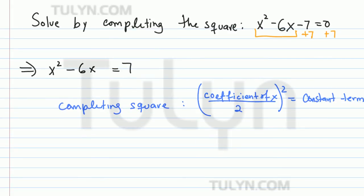So doing that, the coefficient of x in this case is negative 6. So we'll take negative 6, divide that by 2, and then square the result. So we have negative 3 squared, which is 9.